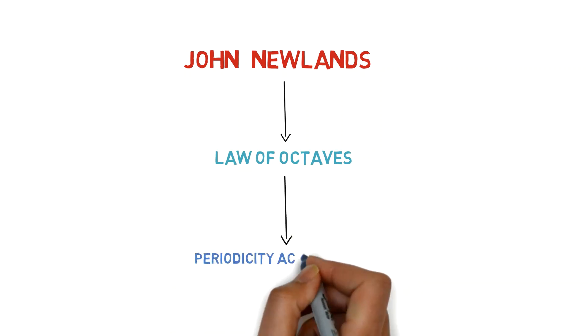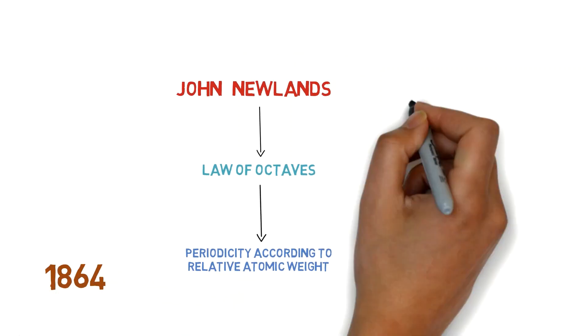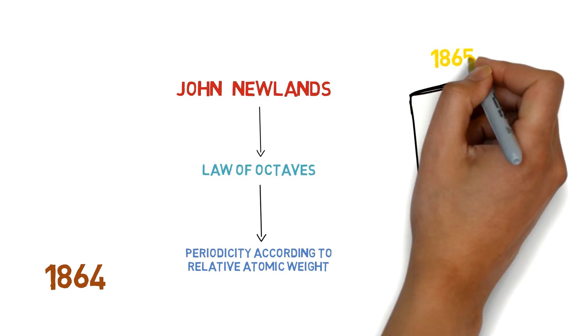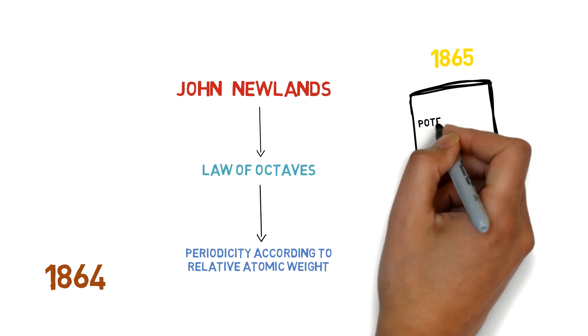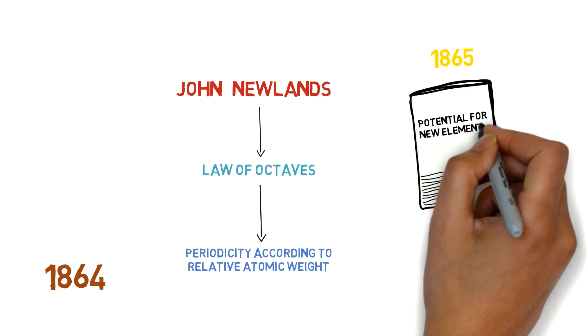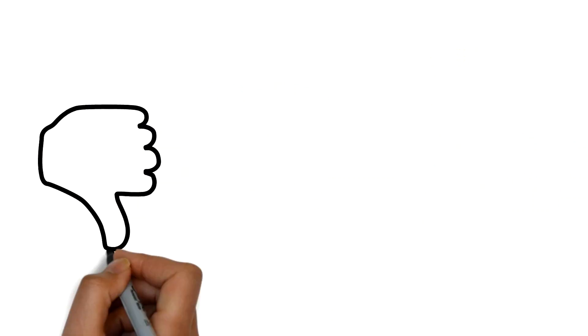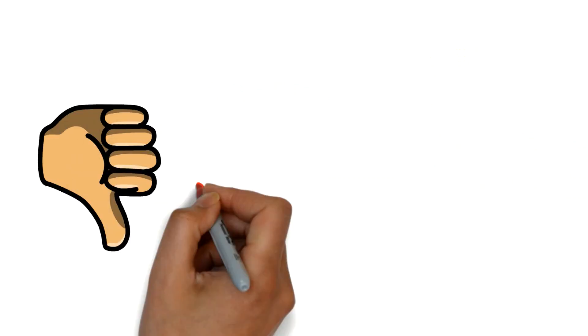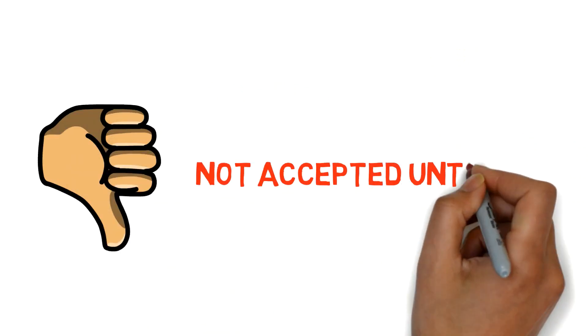John Newlands described a law of octaves, noting their periodicity according to relative atomic weight in 1864, and publishing it in 1865. His proposal identified the potential for new elements, such as germanium. The concept was criticized, and his innovation was not recognized by the Society of Chemists until 1887.